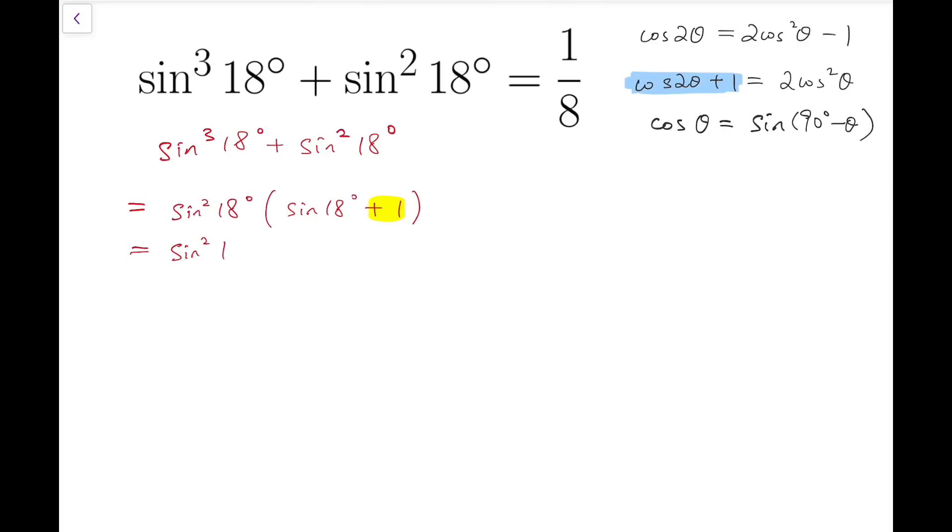Then using this, I can replace sine 18 by cosine 72. So in this case, I can make use of the fact that double angle equals 2 cosine squared minus 1.